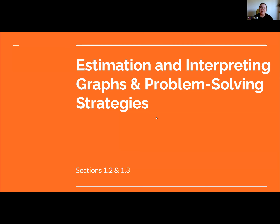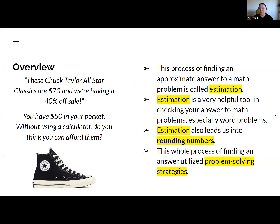Hello everyone. I'm going to go over our next sections — section 1.2 and 1.3. This is going to cover estimation, interpreting graphs, and problem solving strategies. Starting with our overview: these Chuck Taylor All-Star classics are $70 and we're having a 40% off sale. You have $50 in your pocket — without using a calculator, do you think you can afford them? These are the types of questions we'll be going over today.